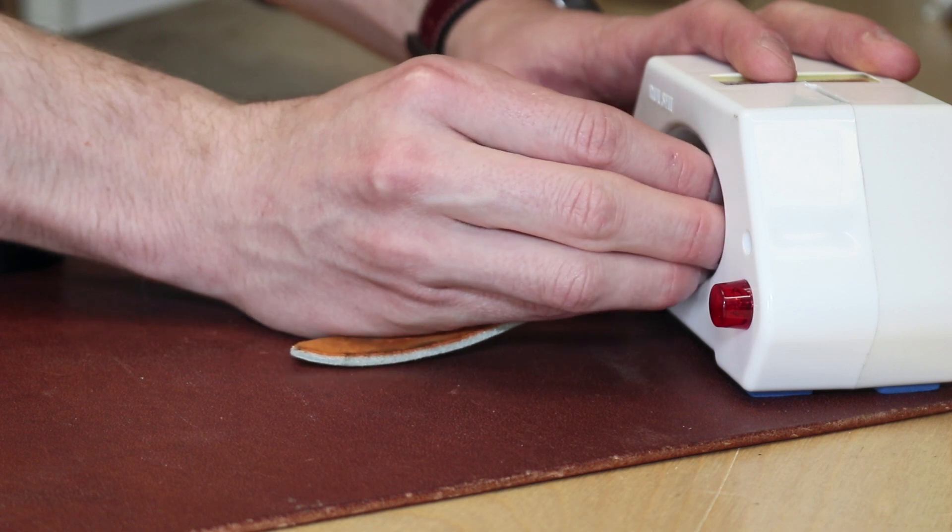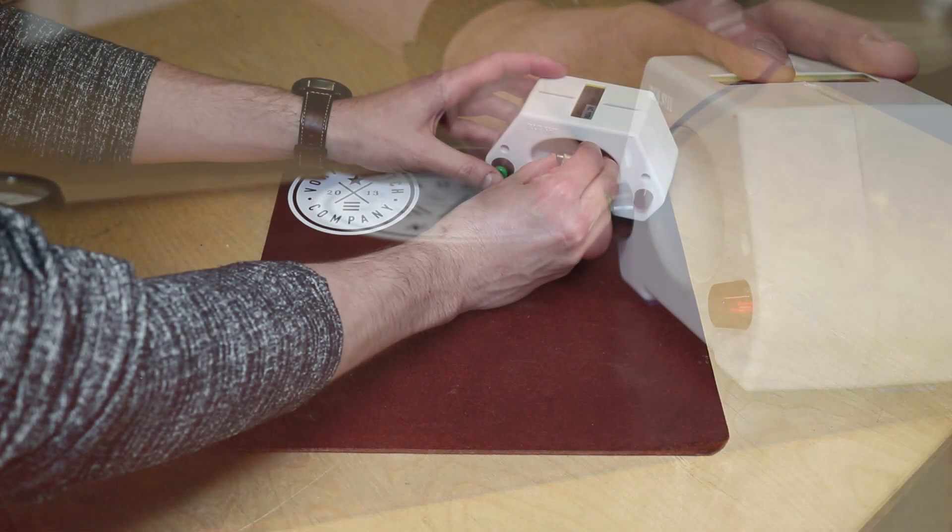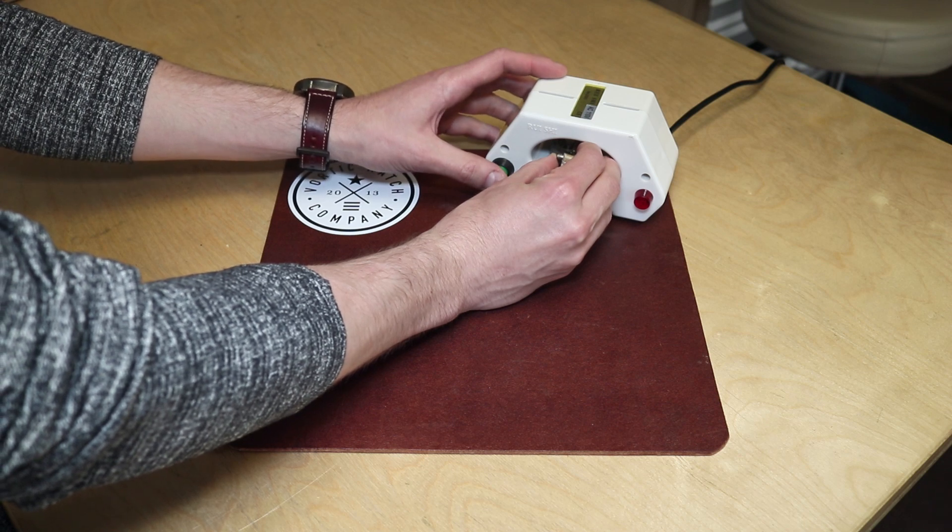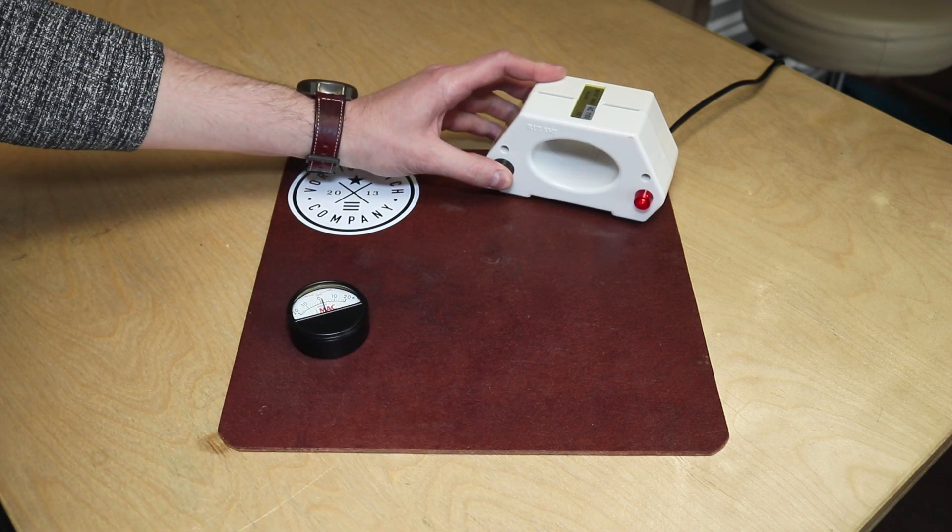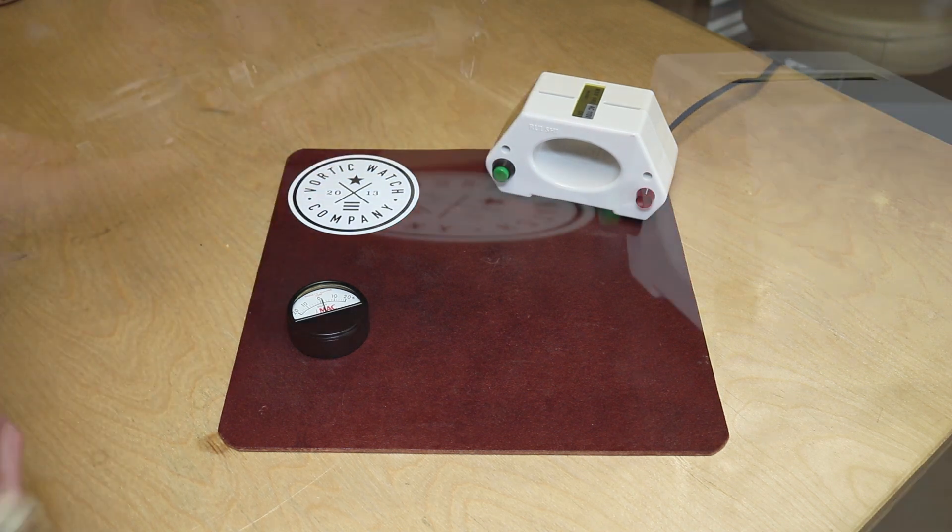And then press and hold this green button and pull backwards at one foot per second. So press and hold and pull back until you pull three feet out while you continue to hold that button.